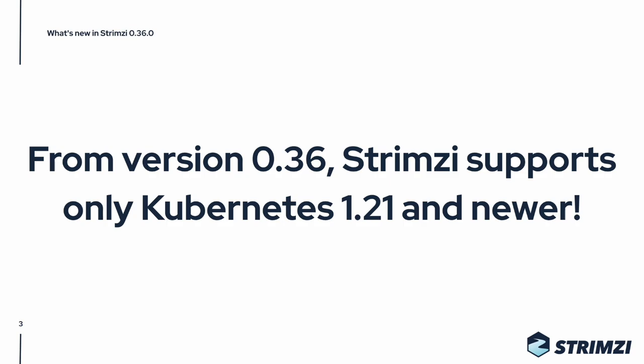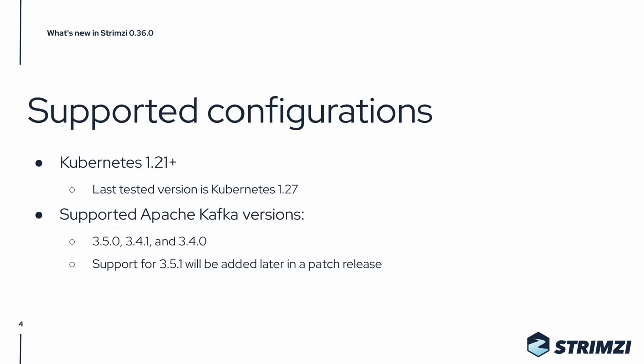This release supports Kubernetes 1.21 and newer, so Kubernetes 1.19 and 1.20 are not supported anymore. The last Kubernetes version with which we tested this release was Kubernetes 1.27, which at the time of the Strimzi release was the last stable Kubernetes release.